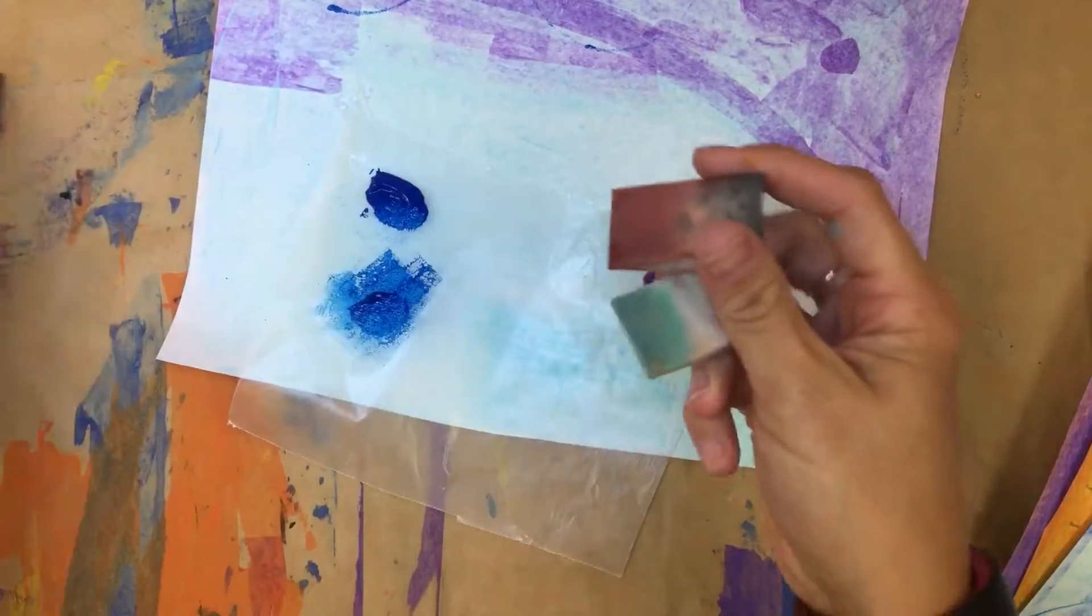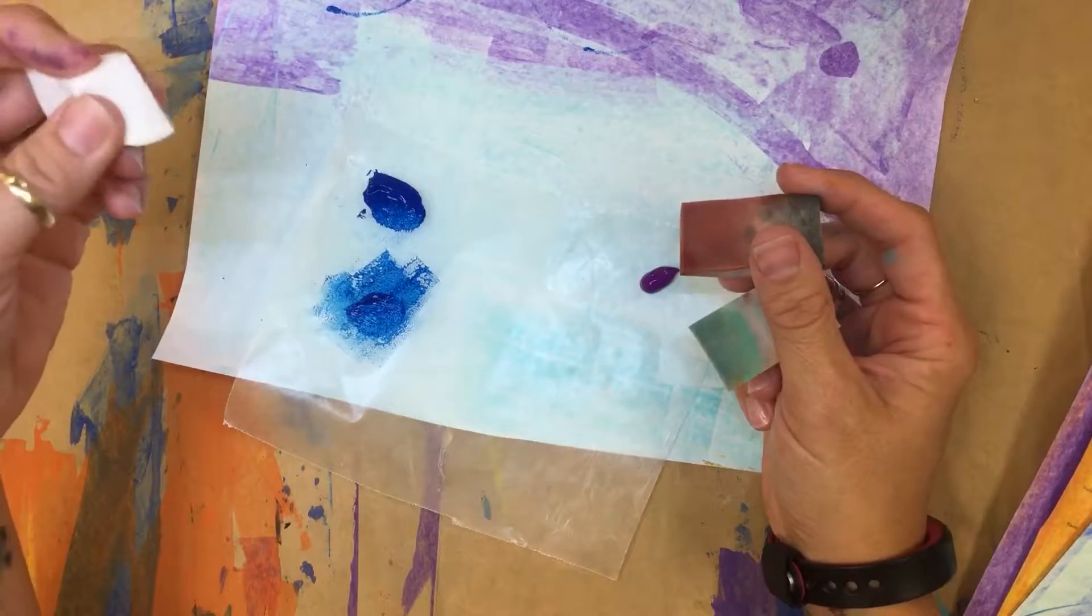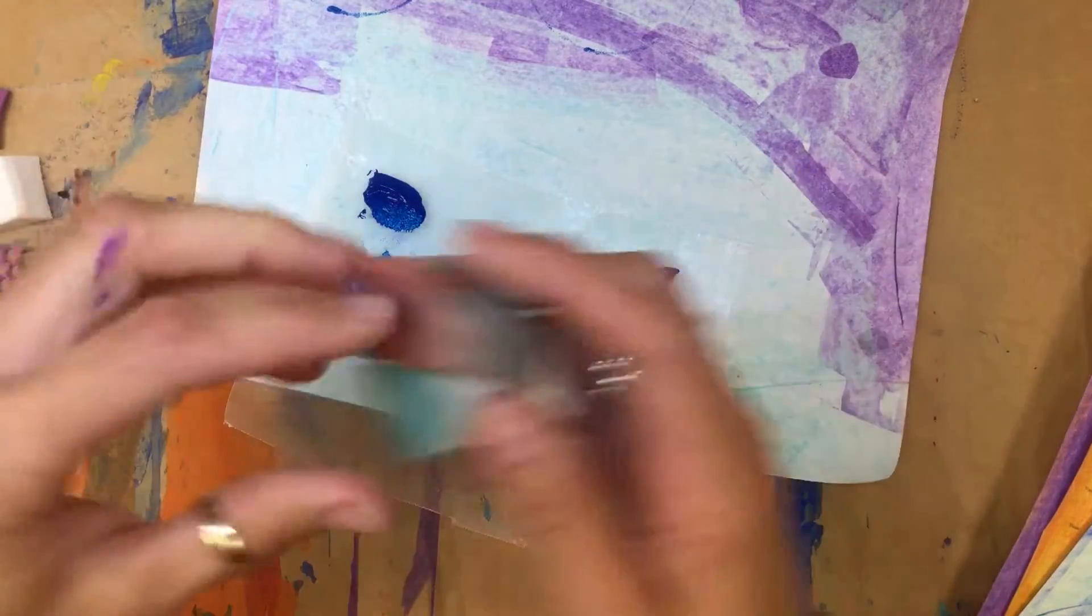You'll be using the makeup sponges that are located by the sink. When you're done with these, if you would rinse them out really good and wring them out when you put them back in the basket, it'll be ready for the next class to use.